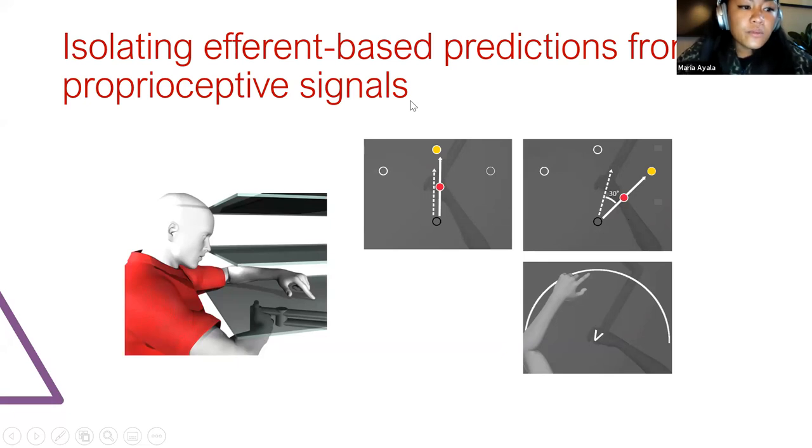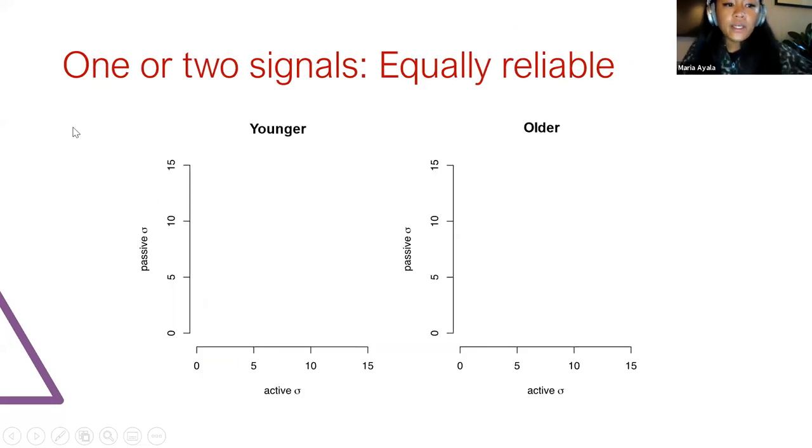So our first question was whether estimates of hand location based on both efferent and afferent signals, so that's our active localization condition, are more precise than those based only on proprioceptive information. According to the MLE rule or other straightforward Bayesian mechanisms, variants should be lower in the condition where the two signals are combined.